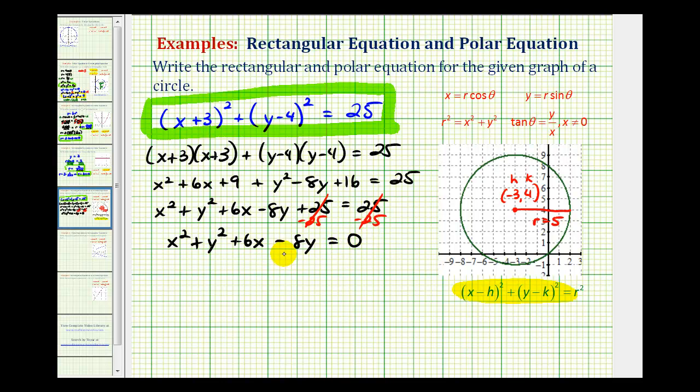And now we'll start performing substitutions using our equations here. Since r squared is equal to x squared plus y squared, we can substitute r squared for x squared plus y squared here. That would give us r squared plus six times x, but x is equal to r cosine theta, minus eight times y, and y is equal to r sine theta.